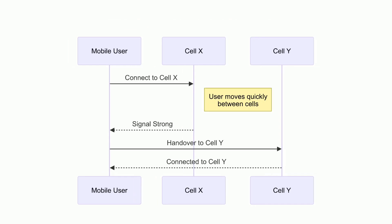Scenario 2. In a highway scenario, event A3 plays a crucial role as users move quickly between cells, necessitating precise handover decisions to maintain seamless connectivity.